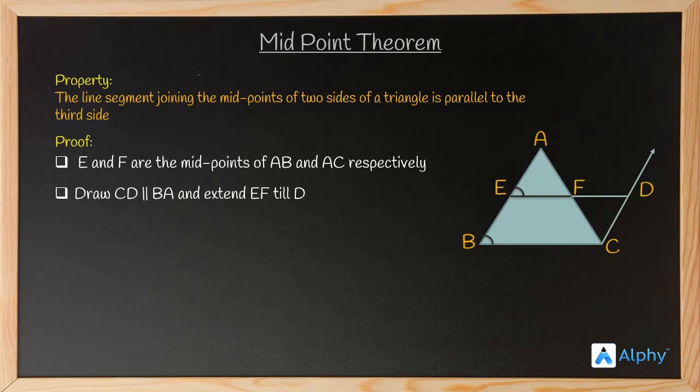Also if you see, AB is parallel to CD according to the construction we have done, and that's why we can say angle FAE is equal to angle FCD. That means this angle is equal to this angle because they form alternate angles for the parallel sides AB and CD.